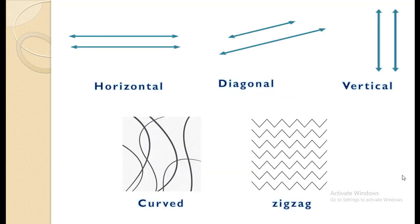Look at these lines. These all lines are quite different and help us a lot in drawing. These lines are horizontal, these are diagonal, these are vertical, these are curved and these are zigzag.